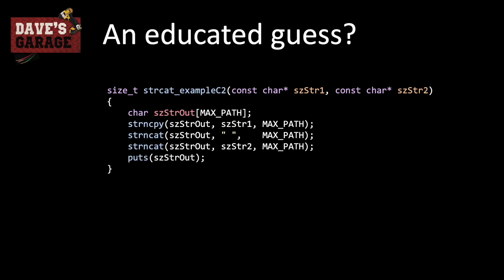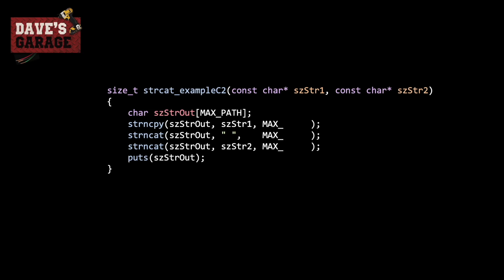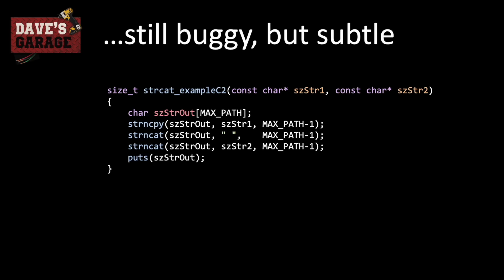So are we done? Not quite. One of the problems is that the n in strncpy represents the number of characters, not including the null terminator — so we fix that by passing maxpath minus one to strncpy. But unfortunately there's still a problem: if strncpy hits the end of the buffer, it simply stops writing characters and does not null-terminate the string. So your strncat is going to wander off into space again.